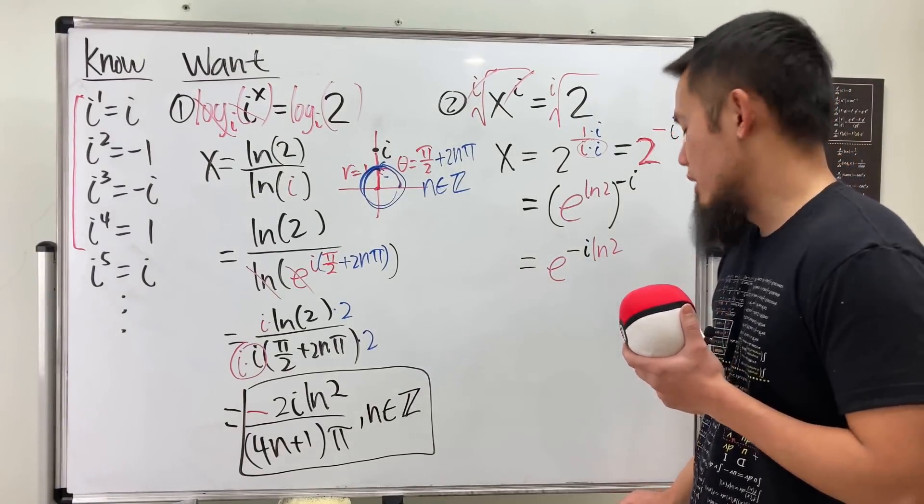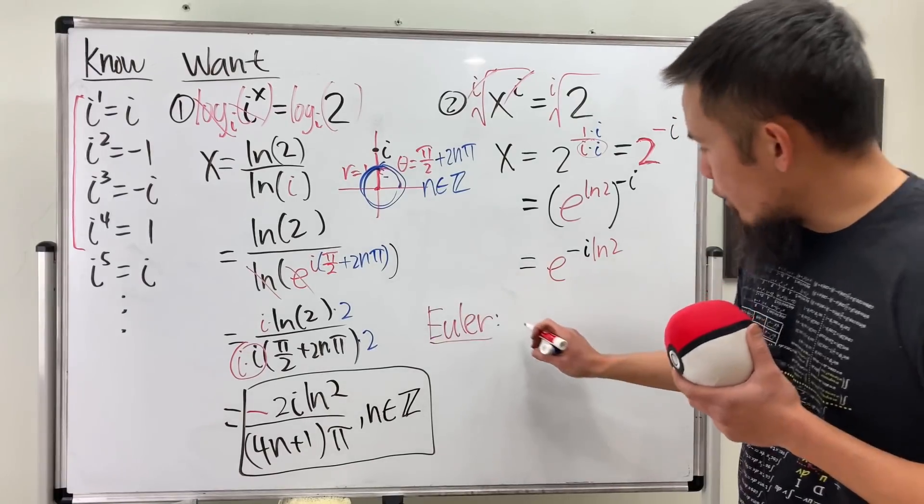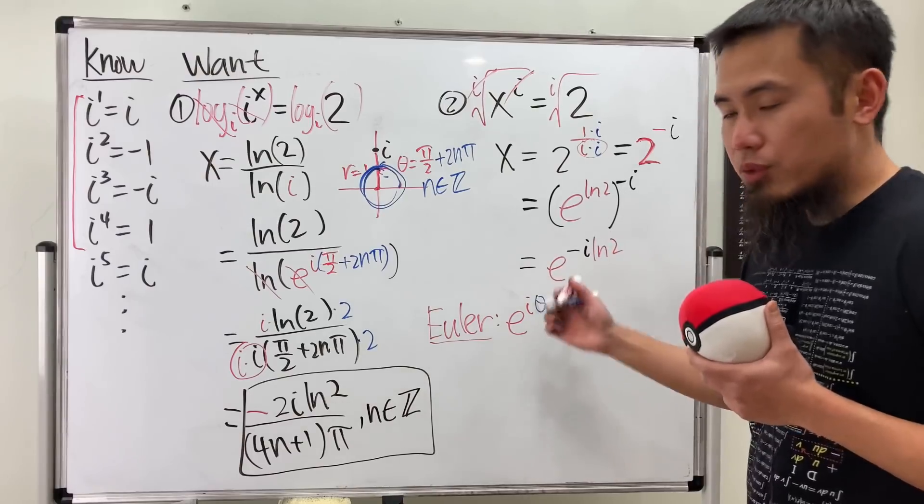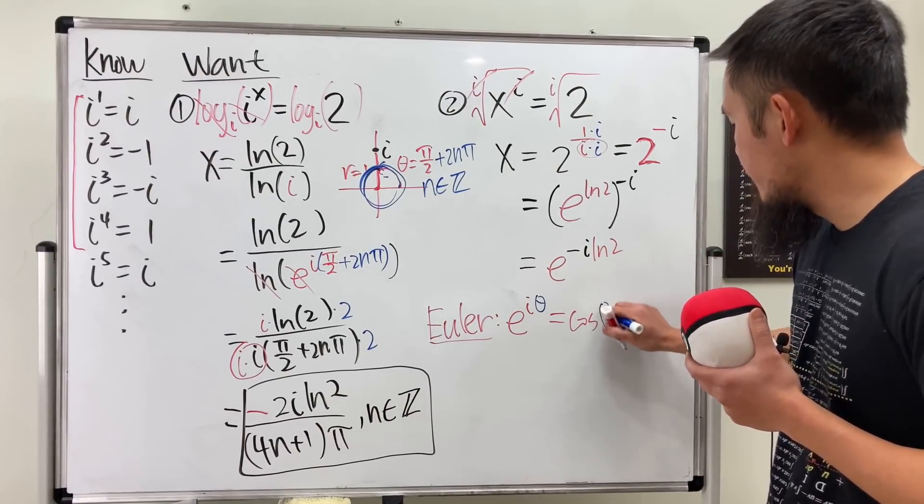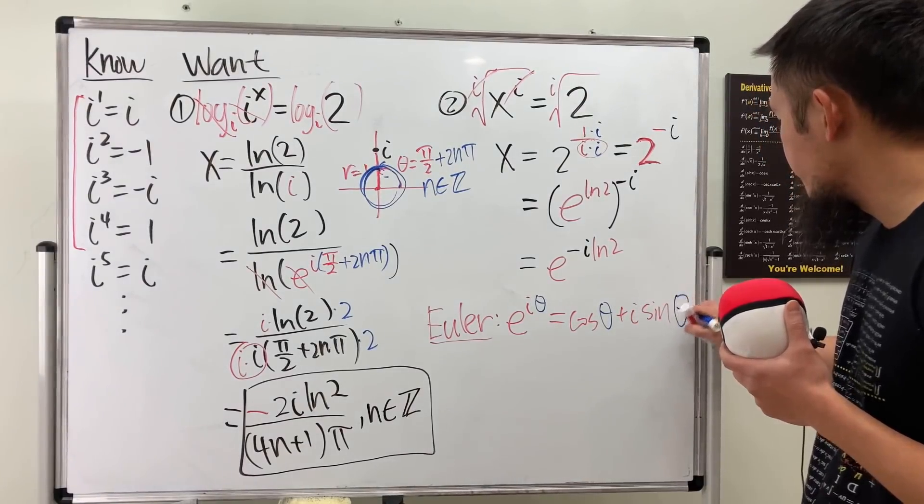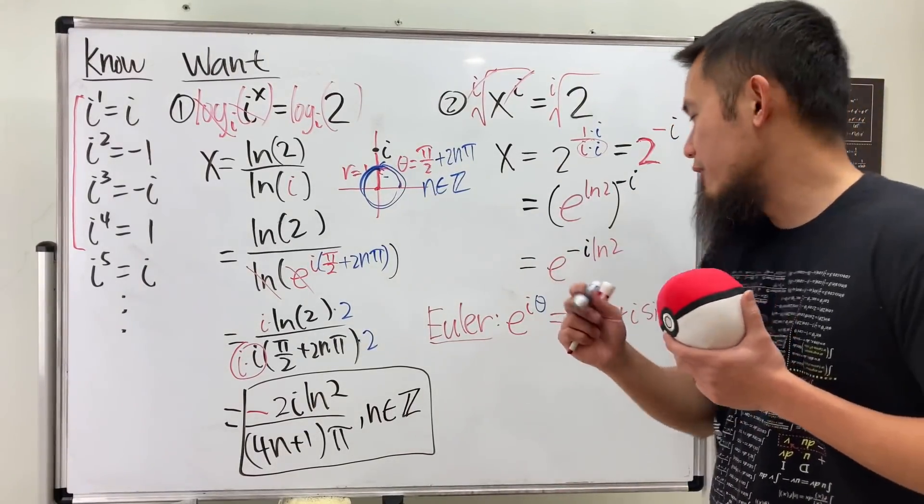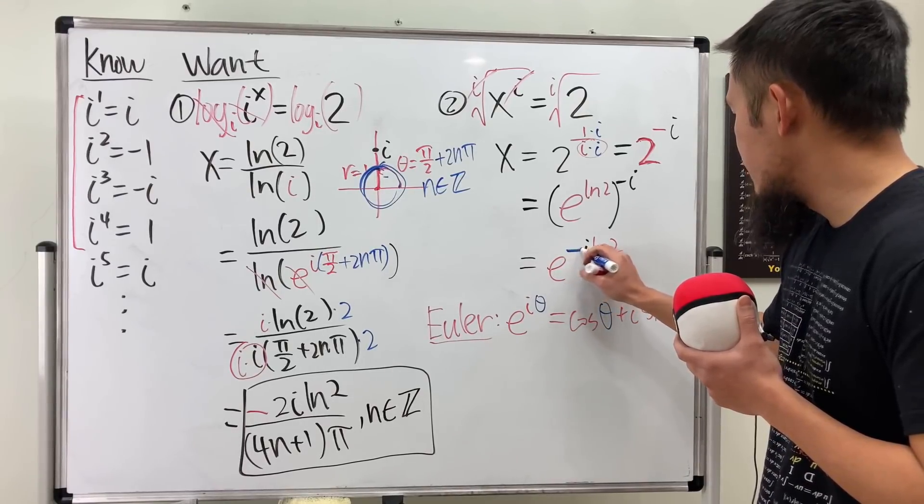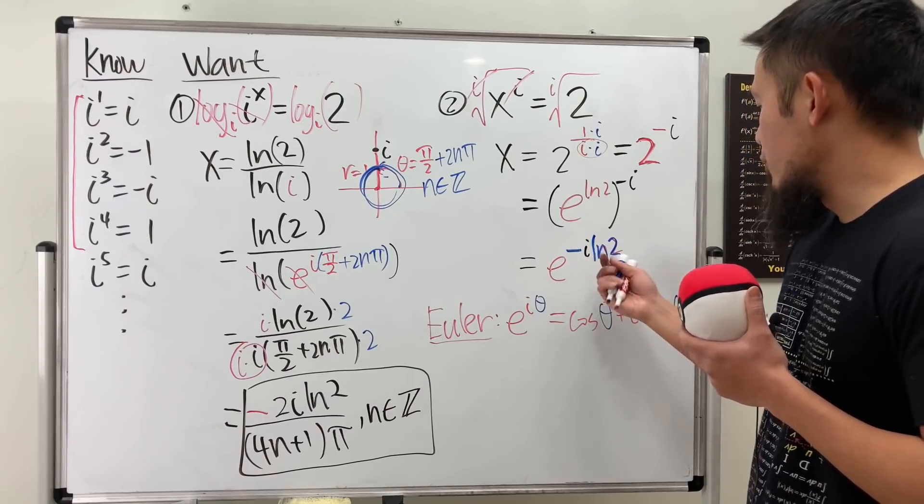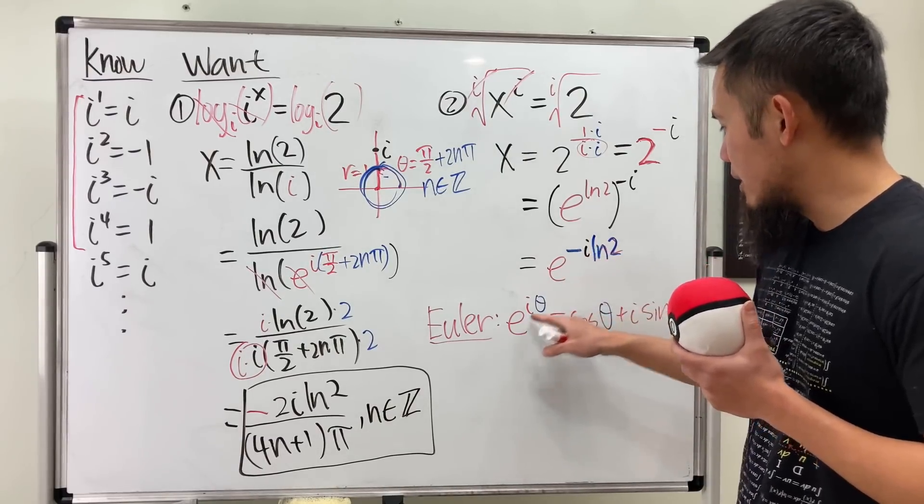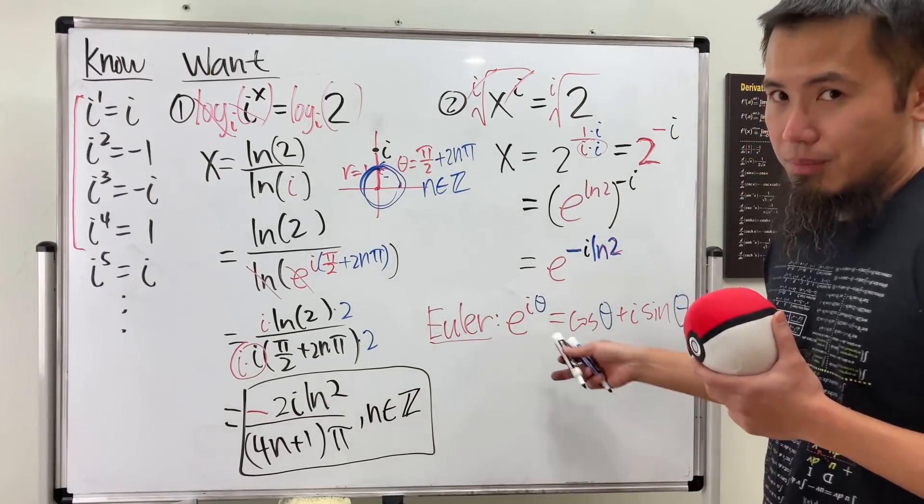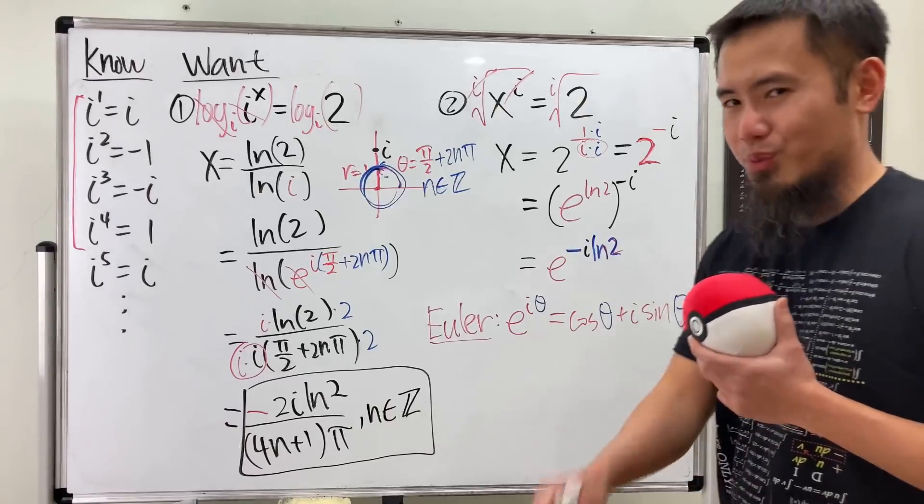Now, let me remind you guys what the Euler's formula is. Euler's formula, e to the iθ, this right here will actually be cos(θ) plus i·sin(θ). So, the final punch is that, well, notice that we have this negative here, and then the ln(2) here, which is going to be the θ, because i matches right here. So, we can just use this formula, and how many answers do we have? Just one, in this case.